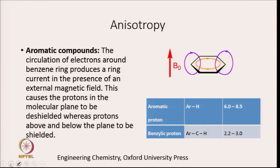The circulation of electrons around the benzene ring produces a ring current in the presence of an external magnetic field. This causes protons in the molecular plane to be deshielded, while protons above or below the plane are shielded. That is why aromatic protons have a very high chemical shift of 6 to 8.5 ppm — they are deshielded. Protons above or below the plane are shielded and have low chemical shift.